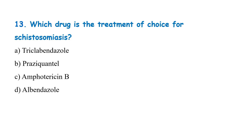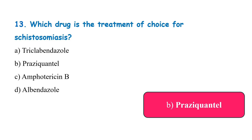Which drug is the treatment of choice for schistosomiasis? Triclabendazole, praziquantel, amphotericin B, or albendazole? The correct answer is praziquantel.